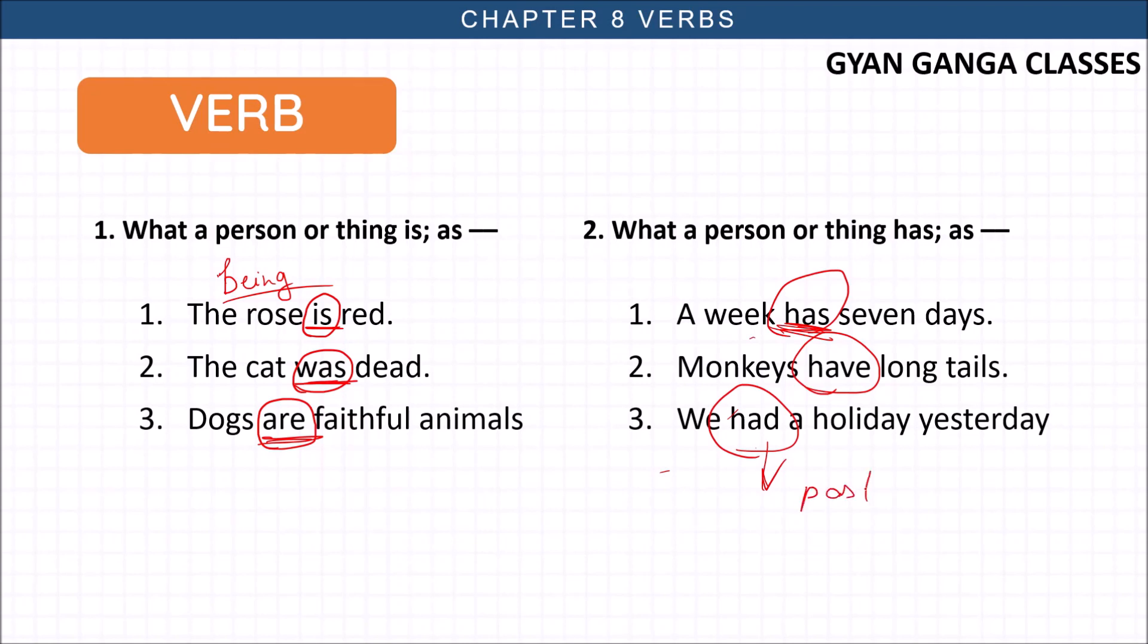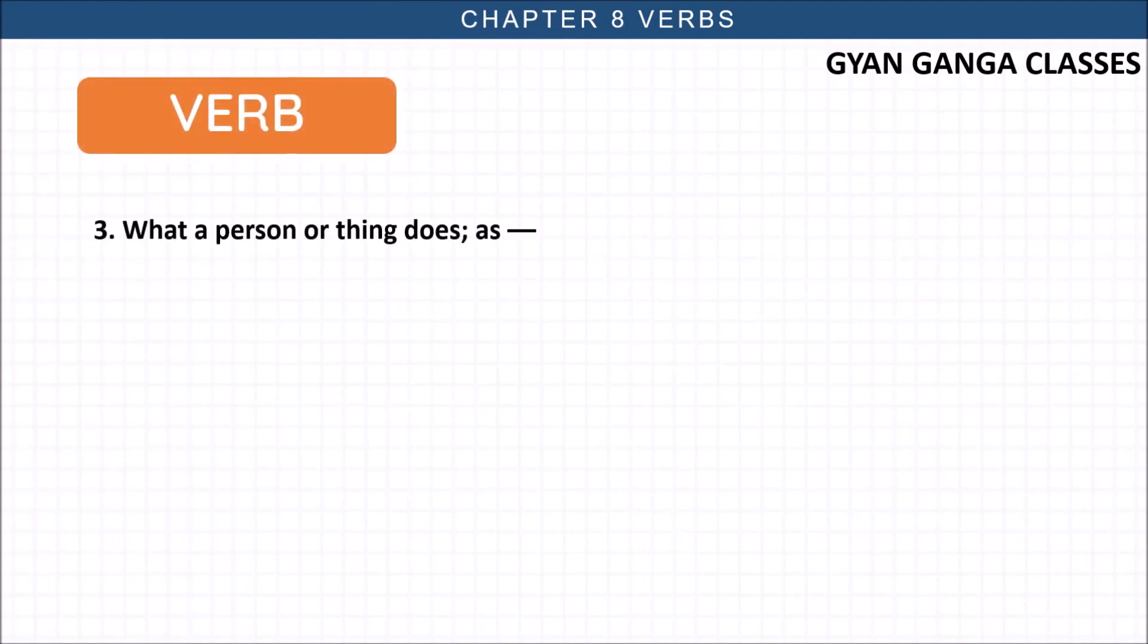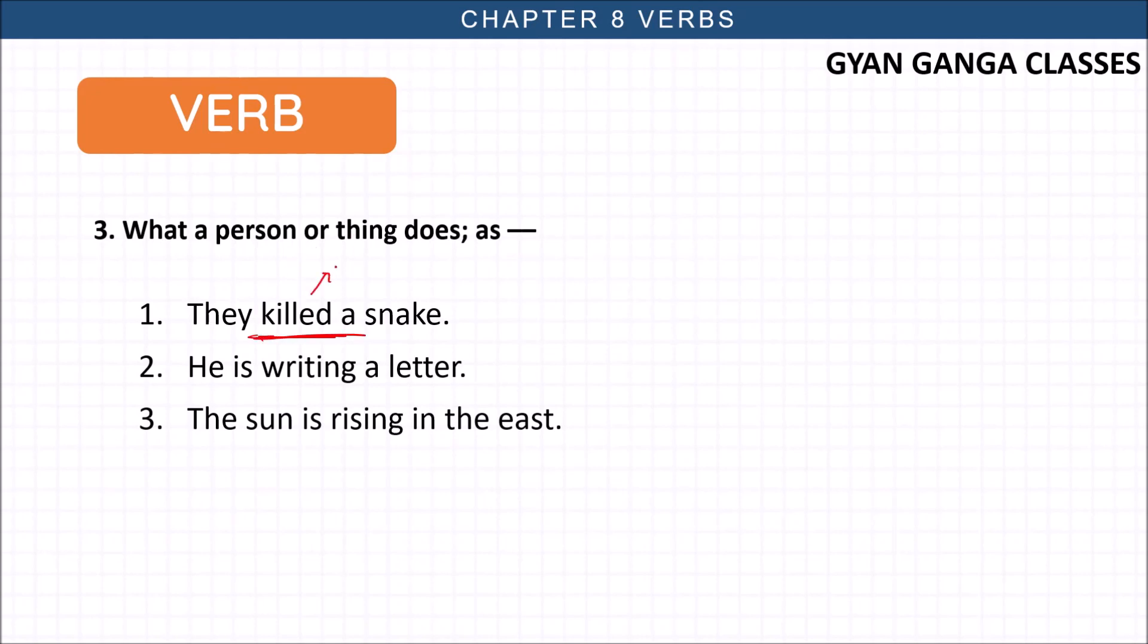What a person or thing does - the action a person or thing is doing. Like they killed a snake. Killed is the past tense of kill. He is writing a letter. This is continuous tense. Sun is rising in the east. Again the continuous tense of rise. Clear?